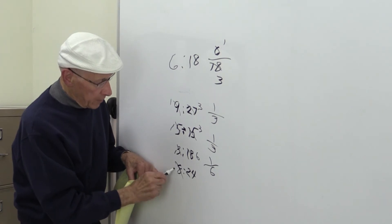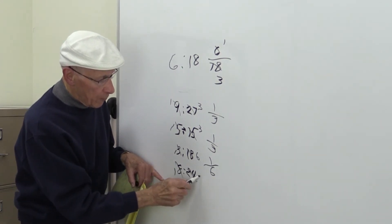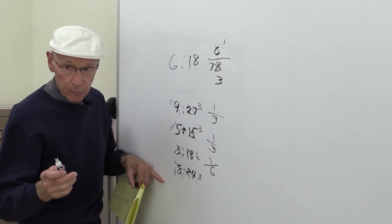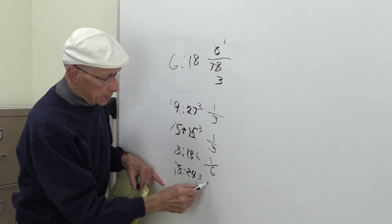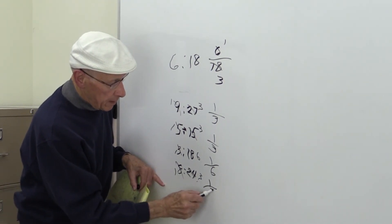8 goes into 8 once. 8 goes into 24 three times. Multiplication table, remember. So you have 1 third.